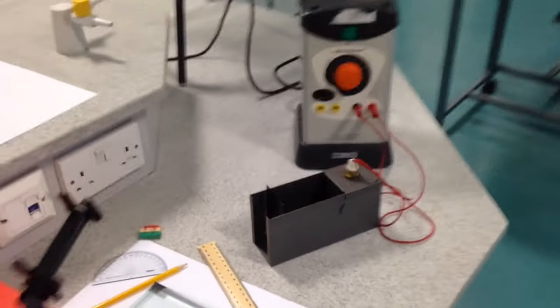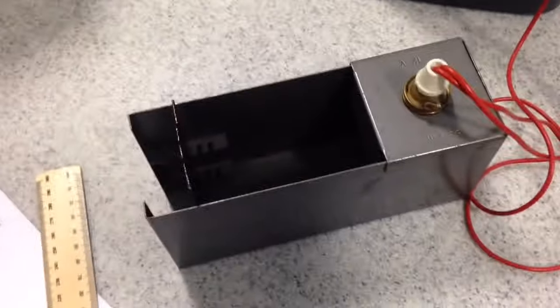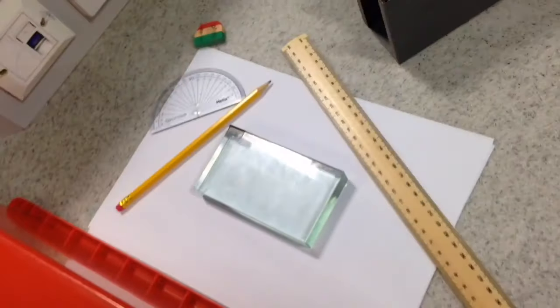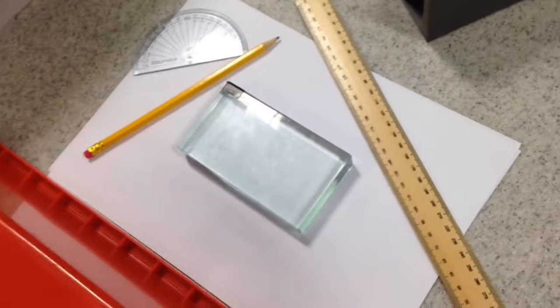For this experiment you will need a power pack, a ray box, ruler, protractor, pencil, glass or perspex block, probably need a rubber, and you need a blank bit of paper.